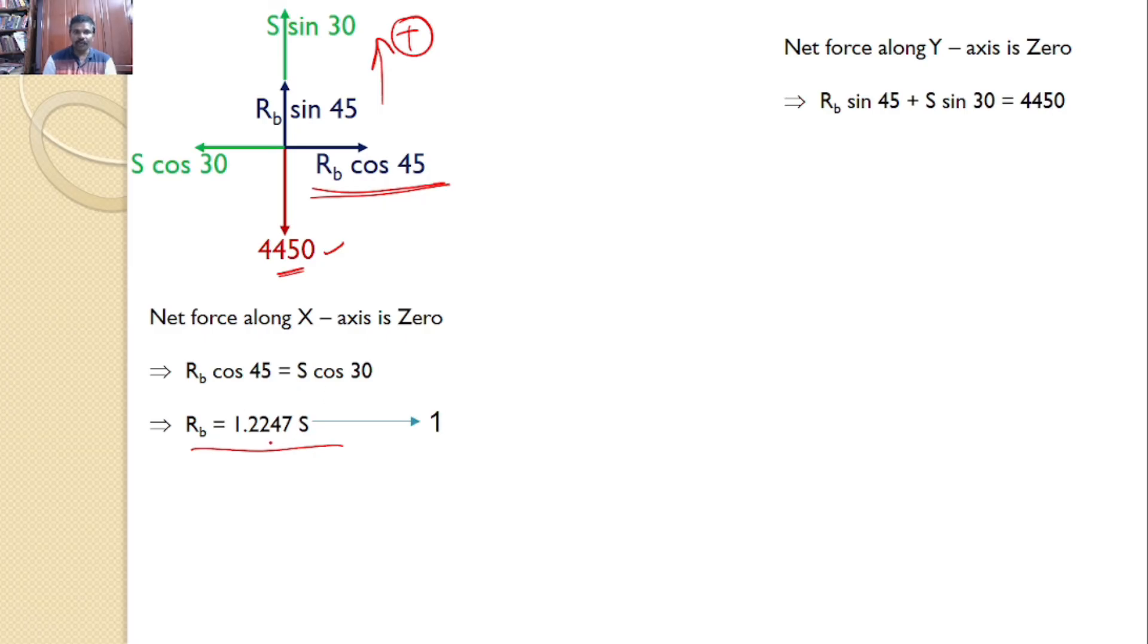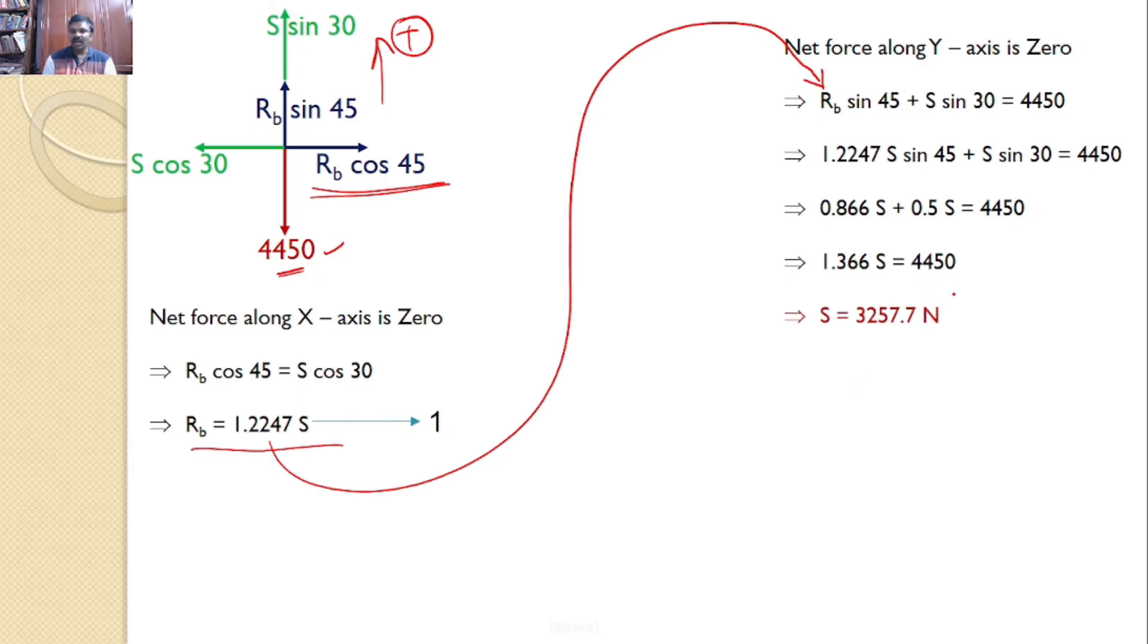But we know that Rb is equal to 1.2247 S. You can substitute here. Hence it becomes 1.2247 S sin 45 plus S sin 30 is equal to 4450. And upon simplification you will get 1.366 S is equal to 4450, or the S value you will get is 3257.7 Newtons.